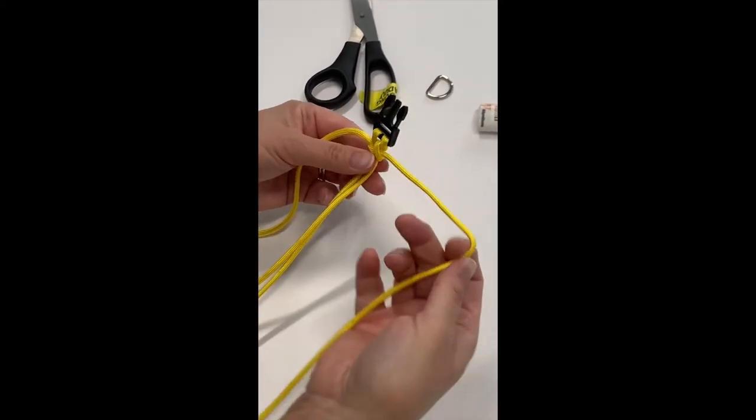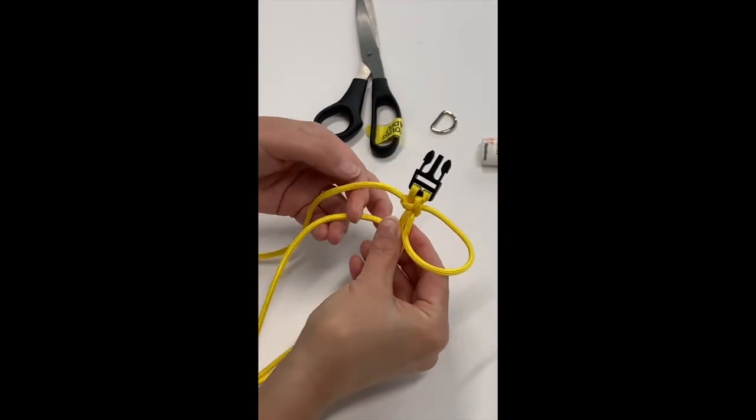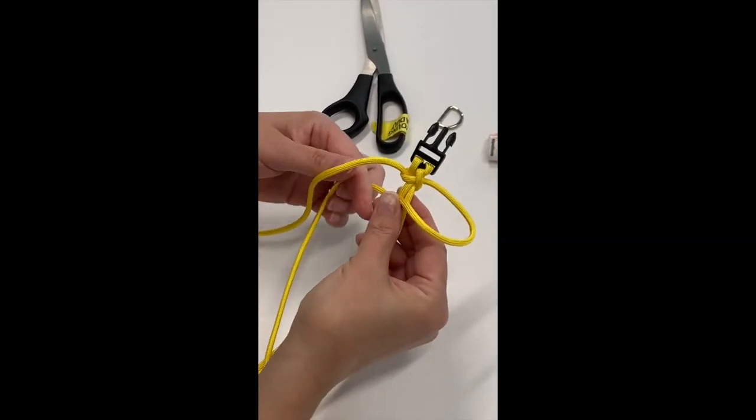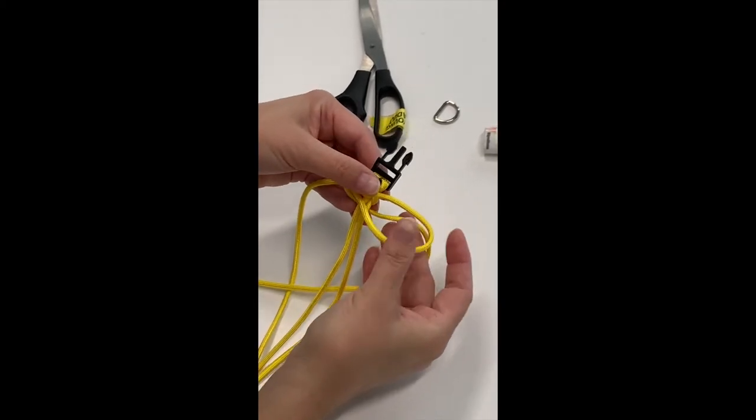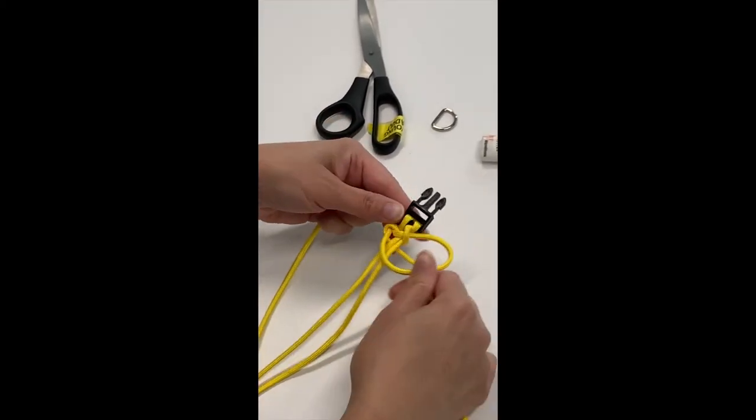And you're going to do it again. Make your loop, take your other paracord, wrap it around and through the loop and pull it tightly.